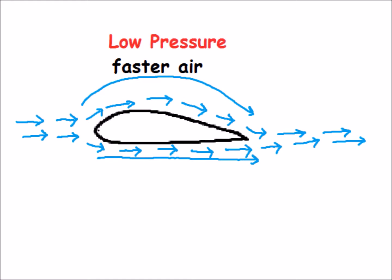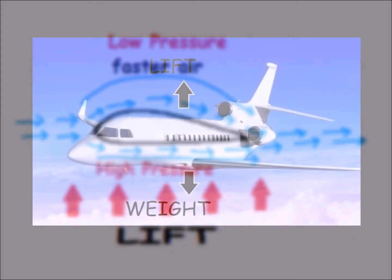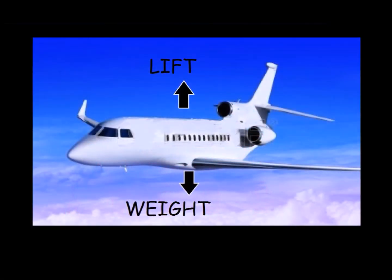Faster air has less pressure. So the top area of the wings has less pressure, while the bottom of the wings has more pressure. This creates lift. Lift balances the weight of the airplane and holds it in the air.